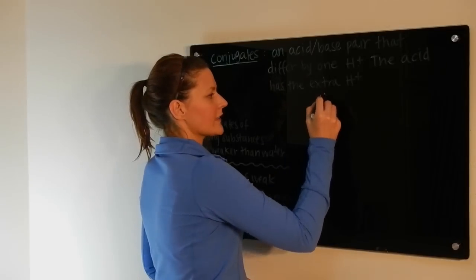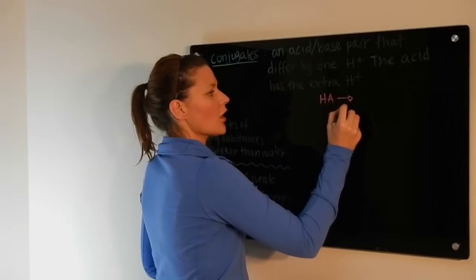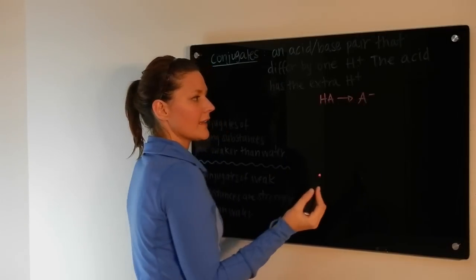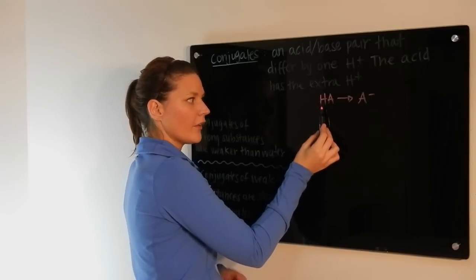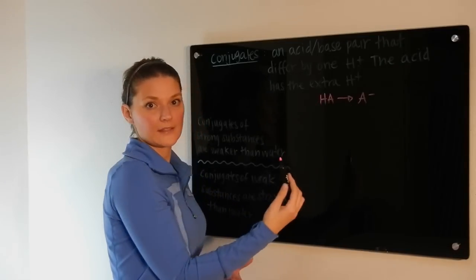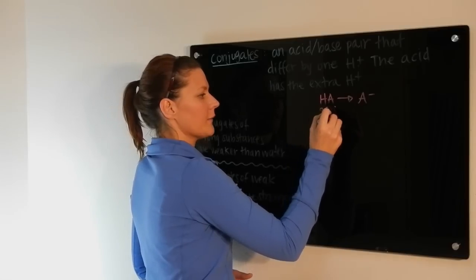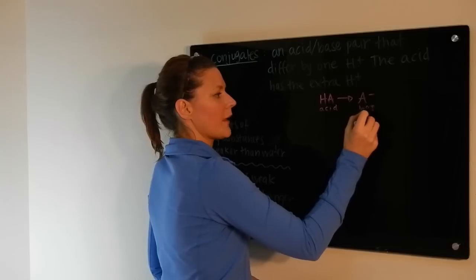if you have a generic acid HA, its conjugate base would be A-. You can see that the acid here has an additional H+ compared to its conjugate base. This here is the acid, and this here is the base.